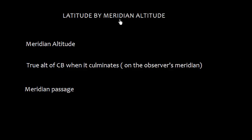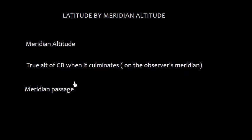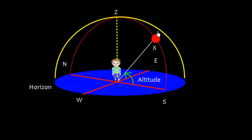Latitude by meridian altitude. Meridian altitude can be defined as the true altitude of a celestial body when it culminates. Culmination means when the body passes on the observer's meridian. This is also known as meridian passage.